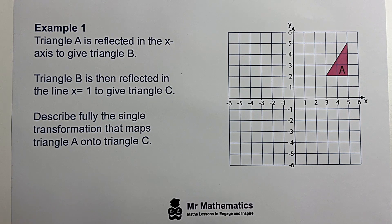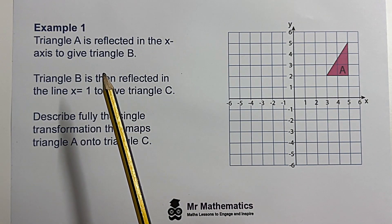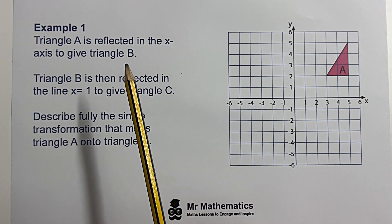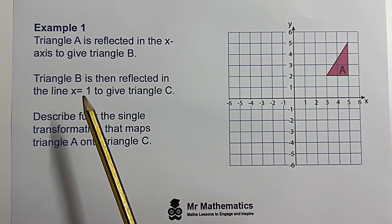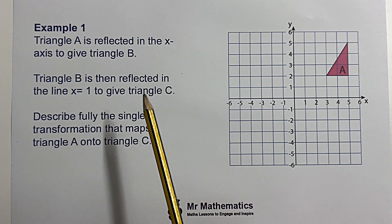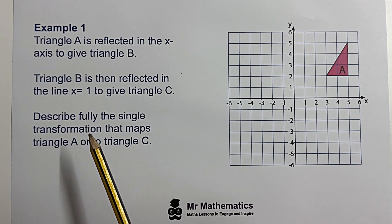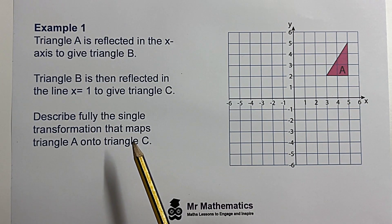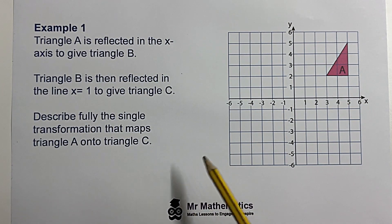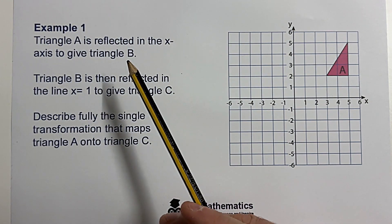For example one, we're told that triangle A is reflected in the x-axis to give triangle B, and then triangle B is reflected in the line x equals one to give triangle C. We need to describe a single transformation that maps triangle A onto triangle C. So if we start with reflecting triangle A in the x-axis —